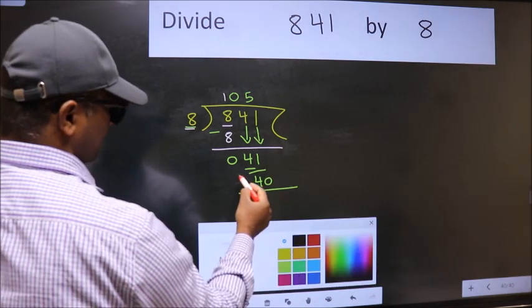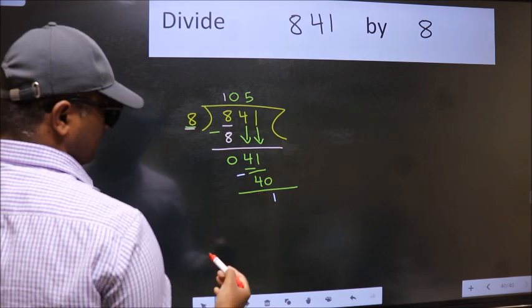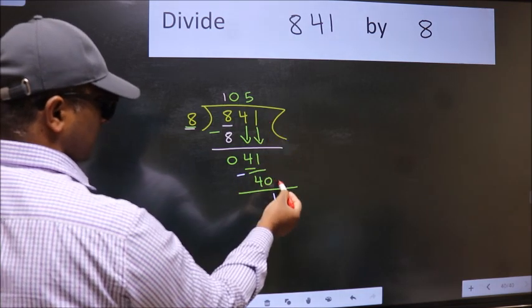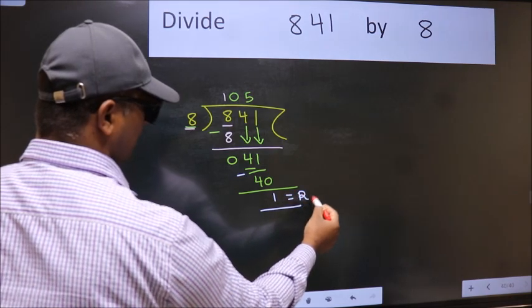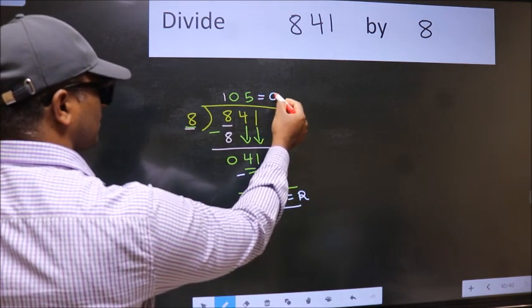Now, we subtract. We get 1. No more numbers to bring down. So, we stop here. This is our remainder and this is our quotient.